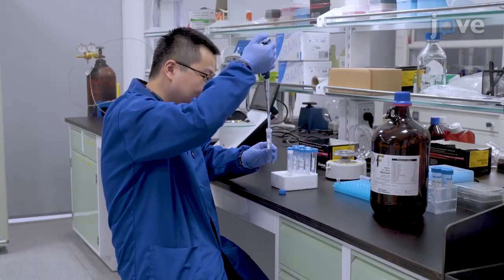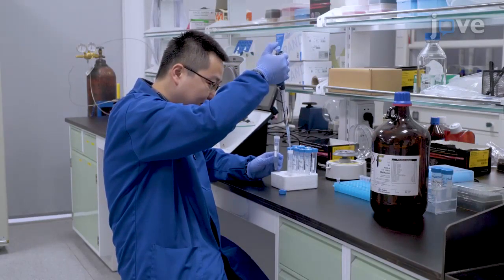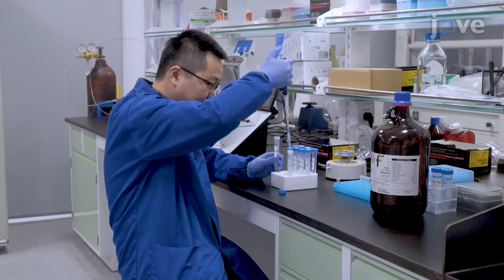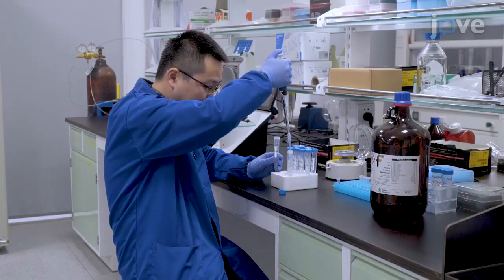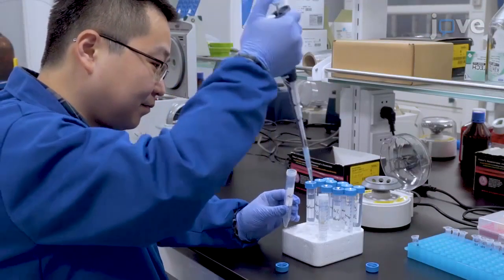For nitroangiotensin-2 desalting, use a 1 mL pipette to precondition a reverse-phase solid-phase extraction, or SPE, column with the addition of 500 mL of methanol and 500 mL of water into the top of the column.